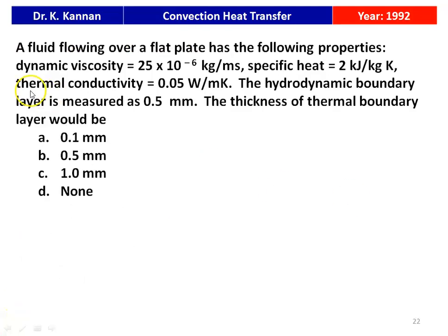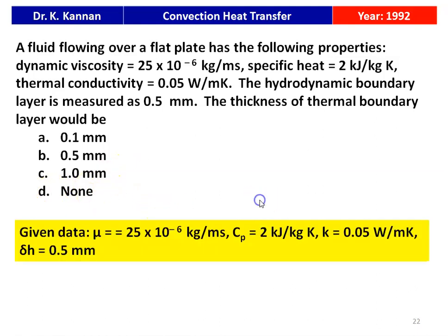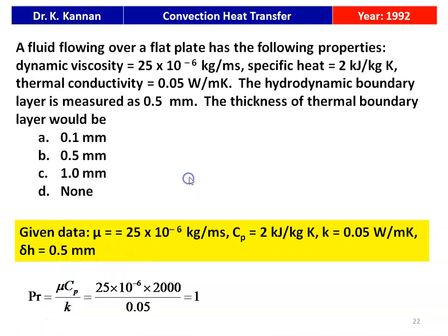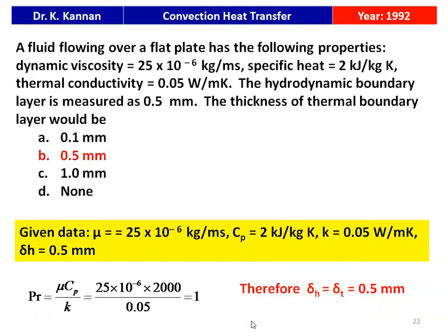Next question from the 1992 paper: a fluid flowing over a flat plate has dynamic viscosity 25×10⁻⁶ kg/m·s, specific heat 2 kJ/kg·K, thermal conductivity 0.05 W/m·K, and hydrodynamic boundary layer thickness 0.5 mm. The thermal boundary layer thickness is — 0.1 mm, 0.5 mm, 1 mm, or none of the above? Prandtl number = μCp/k = 25×10⁻⁶ × 2000 / 0.05 = 1. For Pr = 1, delta_H equals delta_T = 0.5 mm. The answer is 0.5 mm.